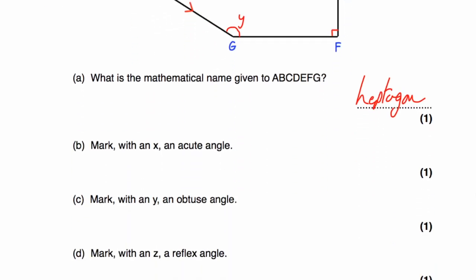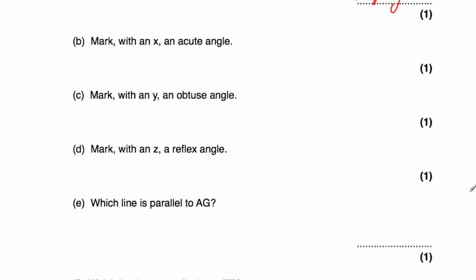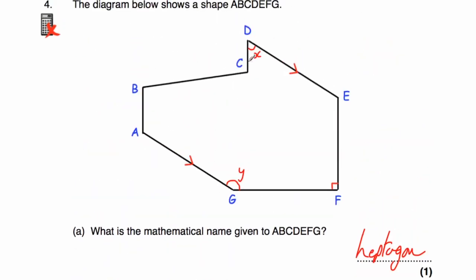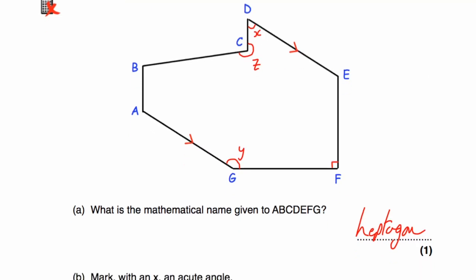Part D says: mark with the letter Z a reflex angle. The reflex angle we discussed is bigger than a straight line. So that's going to be our reflex angle — let's call that Z.